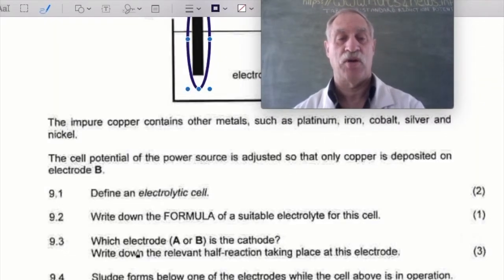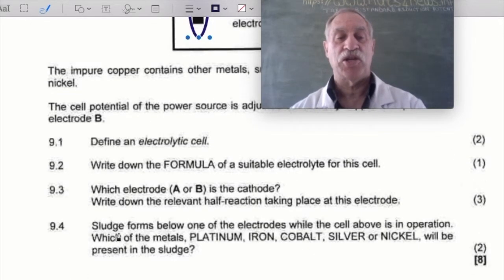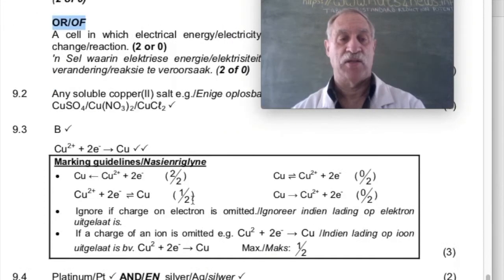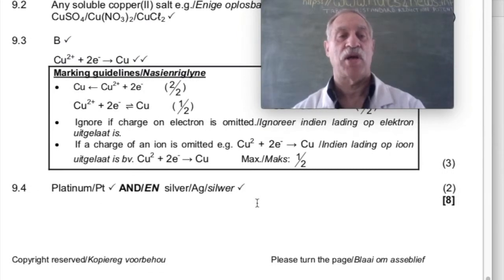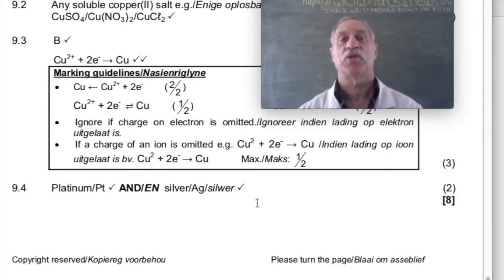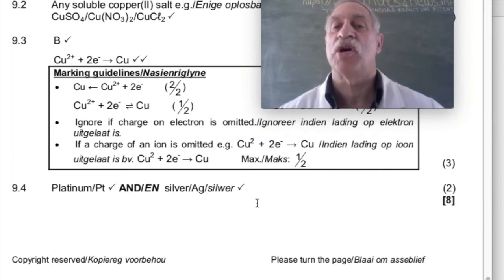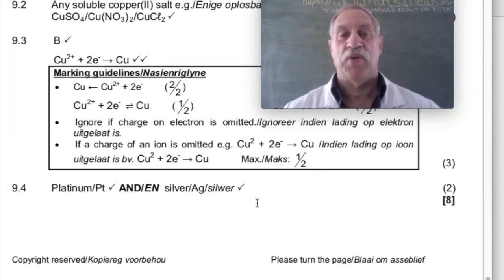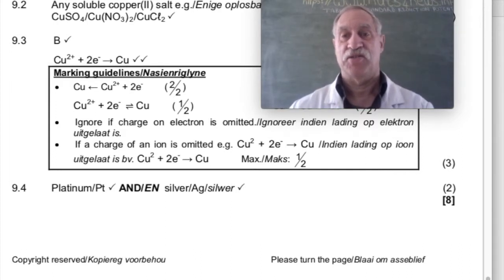They also ask: write down the relevant half-reaction taking place at the cathode. Then: sludge forms below one of the electrodes while the cell is in operation — which of the metals, platinum, iron, cobalt, silver or nickel, will be present in the sludge? We go to our memo and it tells us those two metals. But can you explain it? Let's try.